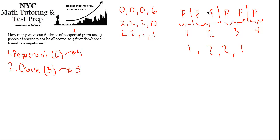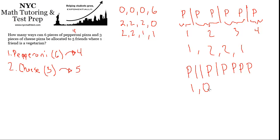We could even have situations where the separators are right next to each other. For example: P, separator, separator, P, separator, P, P, P. This represents the first person getting one, the second person getting none (because two separators are side by side), the third person getting one, and the fourth person getting four. So really what we're doing is not just allocating six pieces — we're arranging nine objects: six pieces of pizza and three separators. Three dividers make four groups.